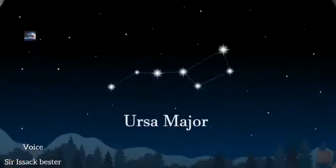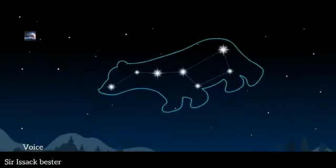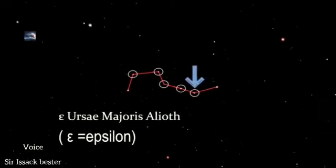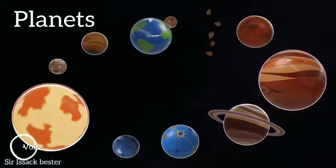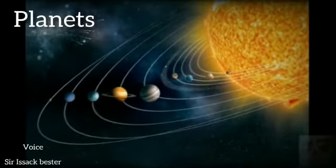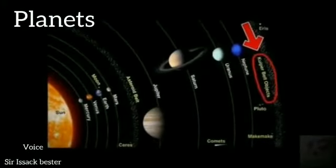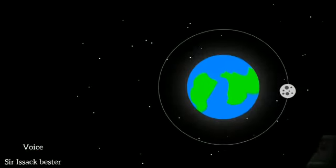What do you mean by constellation? A group of several stars which can usually be recognized by a definite pattern is called a constellation — for example, Ursa Major, Scorpio, and so on. What do you understand by planets? A celestial body which revolves around a particular star in an orbit and gets all its light from the star is called a planet. All eight celestial bodies in our solar system are called planets.